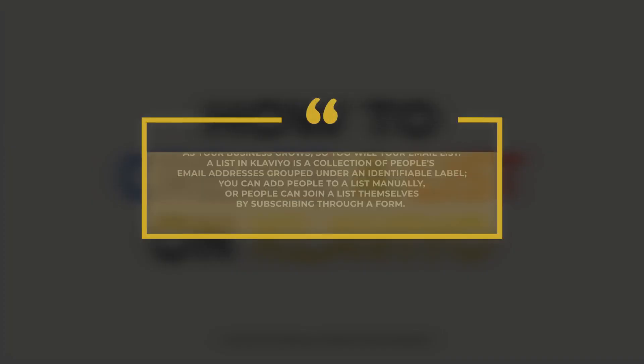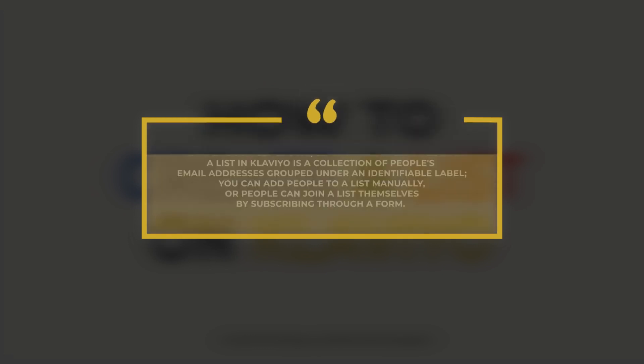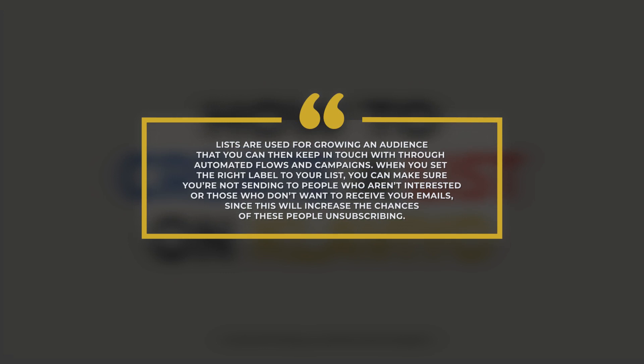As your business grows, so too will your email list. A list in Klaviyo is a collection of people's email addresses grouped under an identifiable label. You can add people to a list manually, or people can join a list themselves by subscribing through a form. Lists are used for growing an audience that you can keep in touch with through automated flows and campaigns. When you set the right label to your list, you can make sure that you're not sending to people who aren't interested or don't want to receive your emails, since this will increase the chances of these people unsubscribing.